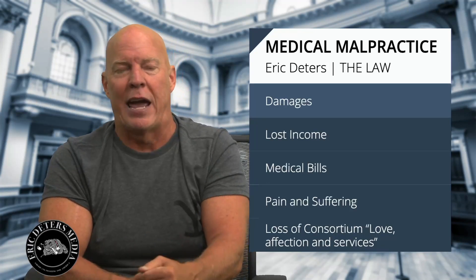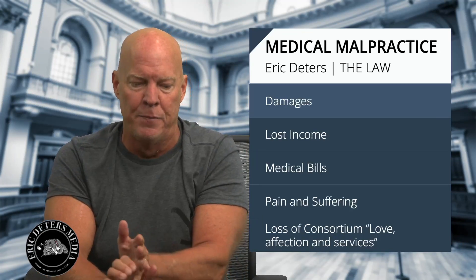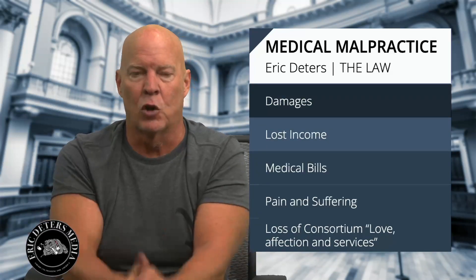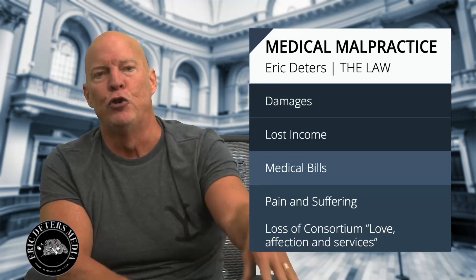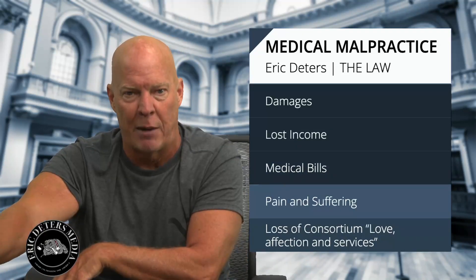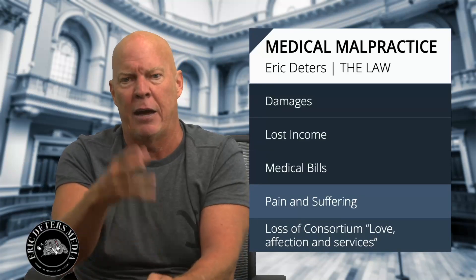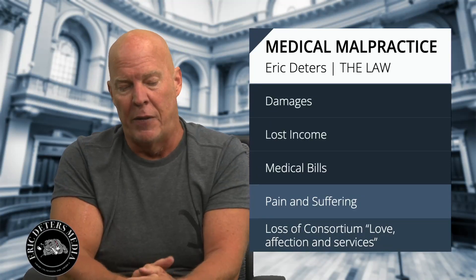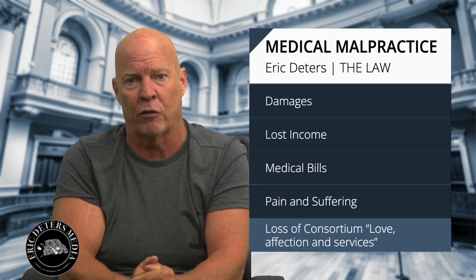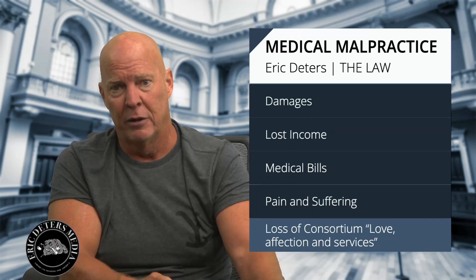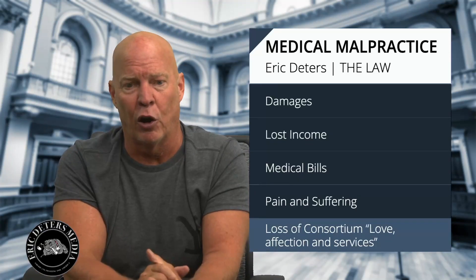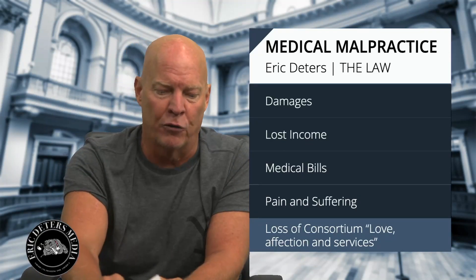Damages include lost income, medical bills, pain and suffering, and court costs. You don't get your attorney fees unless you get punitive damages in a medical malpractice case. The last thing I want to talk about with damages is loss of consortium — love, affection, and services. If you're married and something happens to you, you have a claim for what's called loss of consortium.